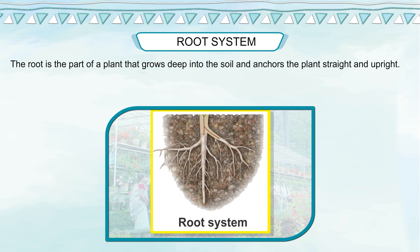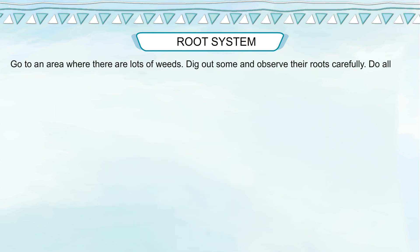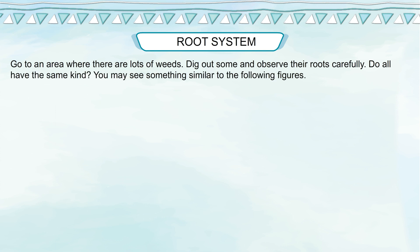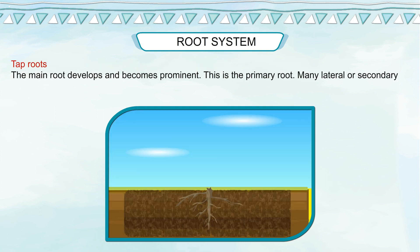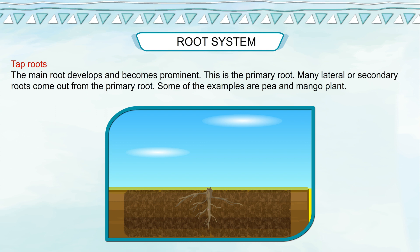The root system: the root is the part of a plant that grows deep into the soil and anchors the plant straight and upright. Roots are structures moving away from sunlight. Roots can be classified into two types on the basis of their branching pattern. Tap roots: the main root develops and becomes prominent — this is the primary root. Many lateral or secondary roots come out from the primary root. Some examples are pea and mango plant.